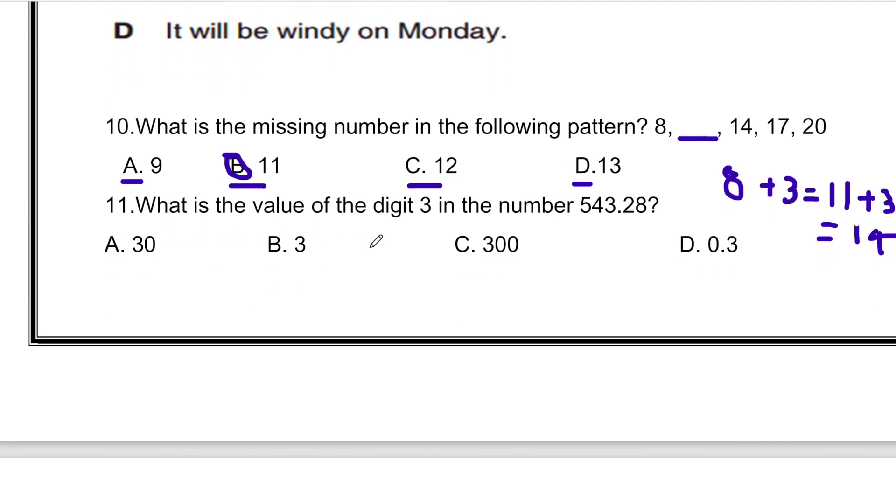What is the value of the digit 3 in the number 543.28? As we all know that if there is a decimal, then the digit to the left of the decimal will be 1, 10, and 100, and so on. Meaning the digit 3 is on the left side. Meaning the digit 3 comes in the place 1. Meaning that the answer is B, that equals to 3.